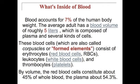Blood accounts for 7% of the human body weight. The average adult has a blood volume of roughly 5 liters, composed of plasma and several kinds of cells. These blood cells, also called corpuscles or formed elements, consist of erythrocytes (red blood cells or RBCs), leukocytes (white blood cells), and thrombocytes (platelets). By volume, red blood cells constitute about 45% of whole blood, and plasma equates to about 54.3%.